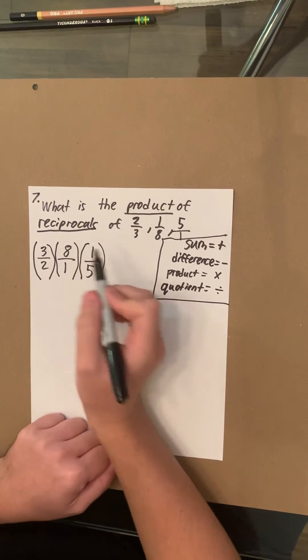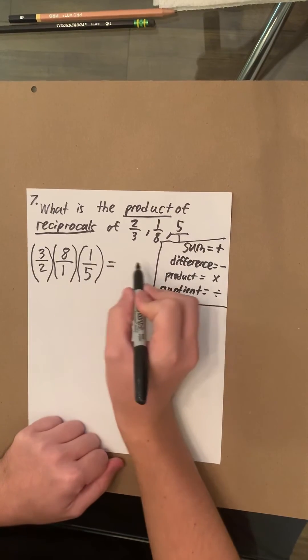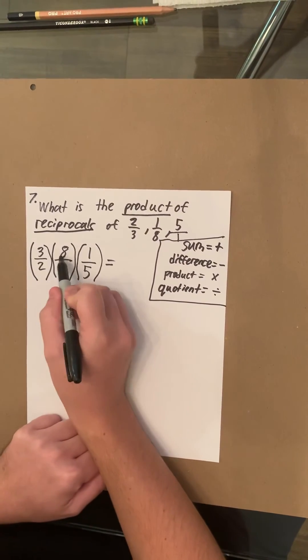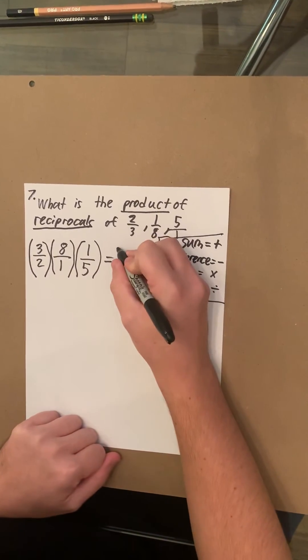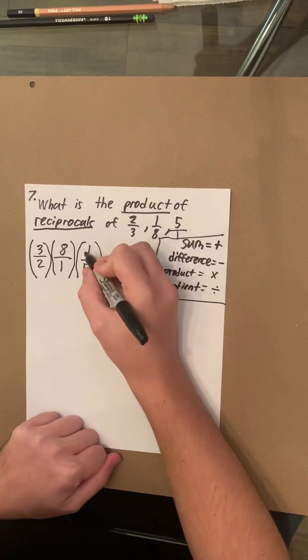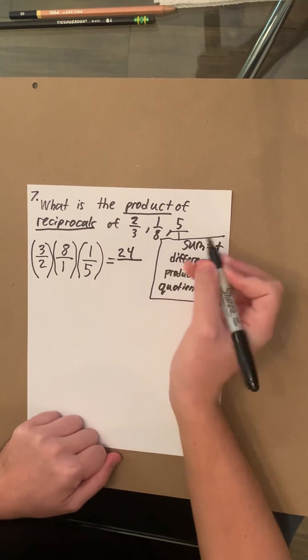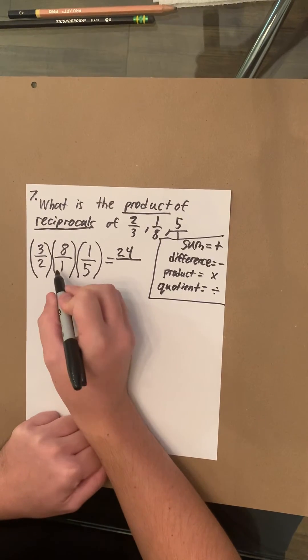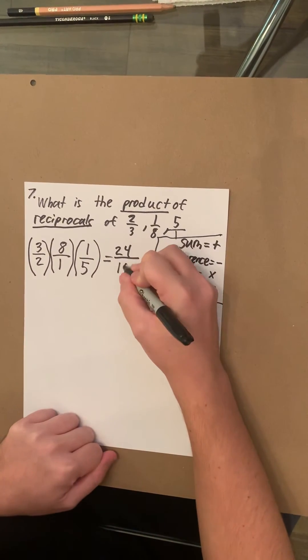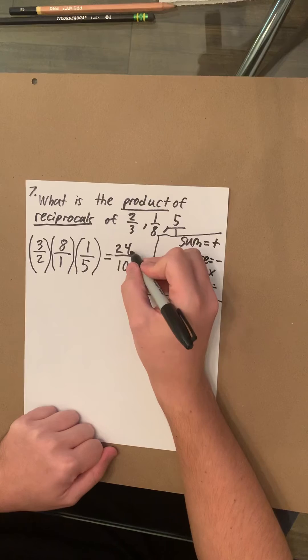So when it comes to multiplication of fractions, you just go straight across top and bottom. So three times eight equals 24. 24 times one equals 24. Two times one equals two. Two times five equals 10. So the answer would be 24 over 10.